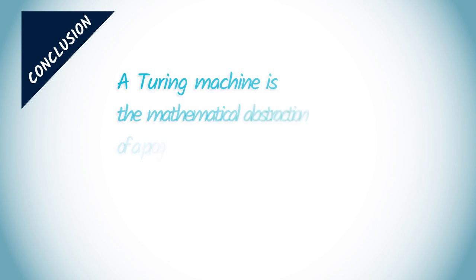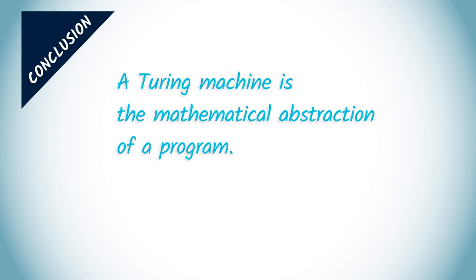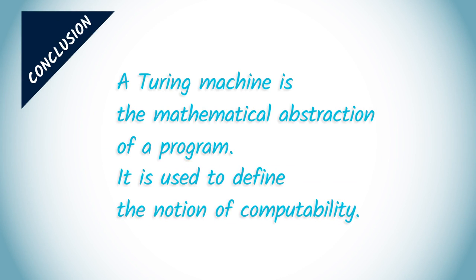In conclusion, a Turing machine is the mathematical abstraction of a program. It is used to define the notion of computability.